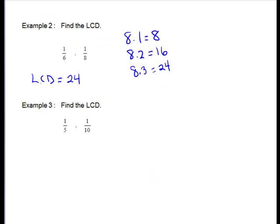Let's look at one more example. Find the LCD for 1/5 and 1/10. What I would do first is I would check does the 5, the smaller one, divide evenly into the larger. So does 5 divide evenly into 10? It actually does.